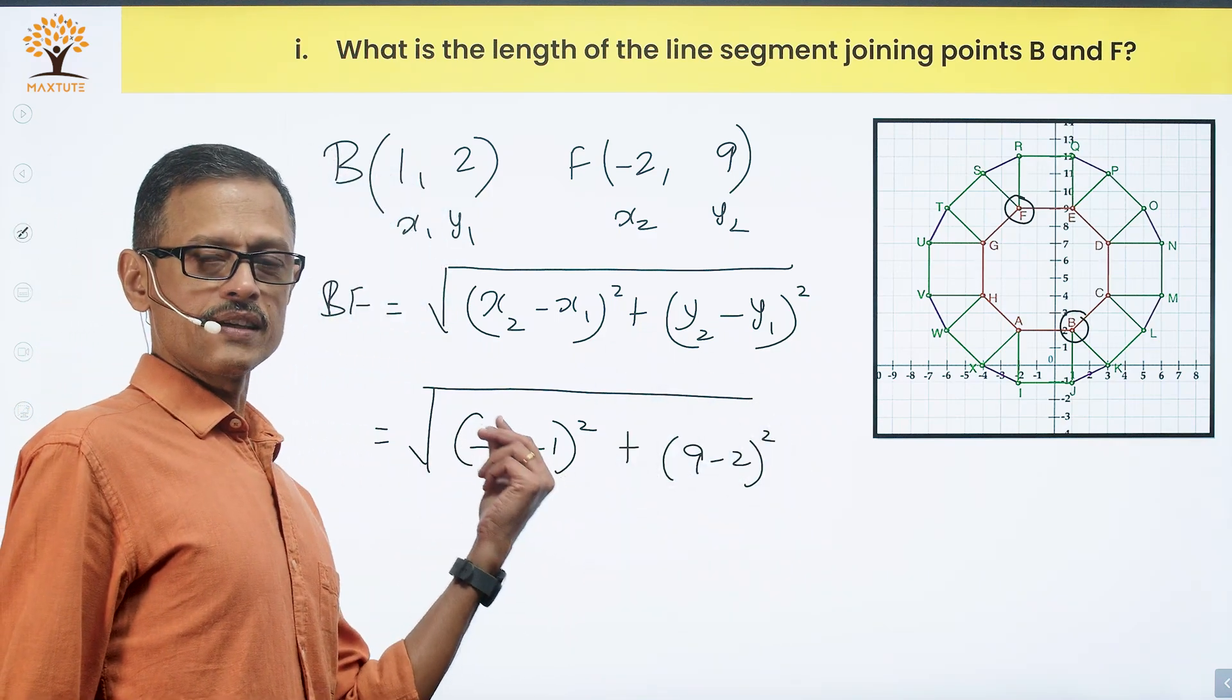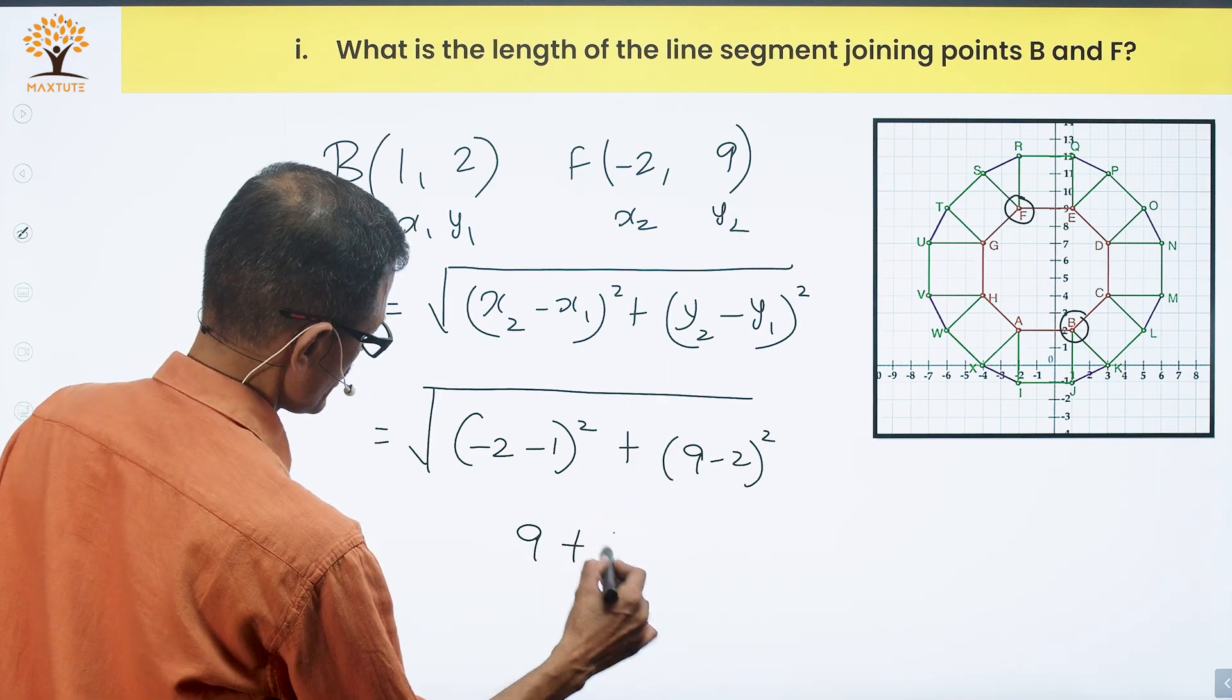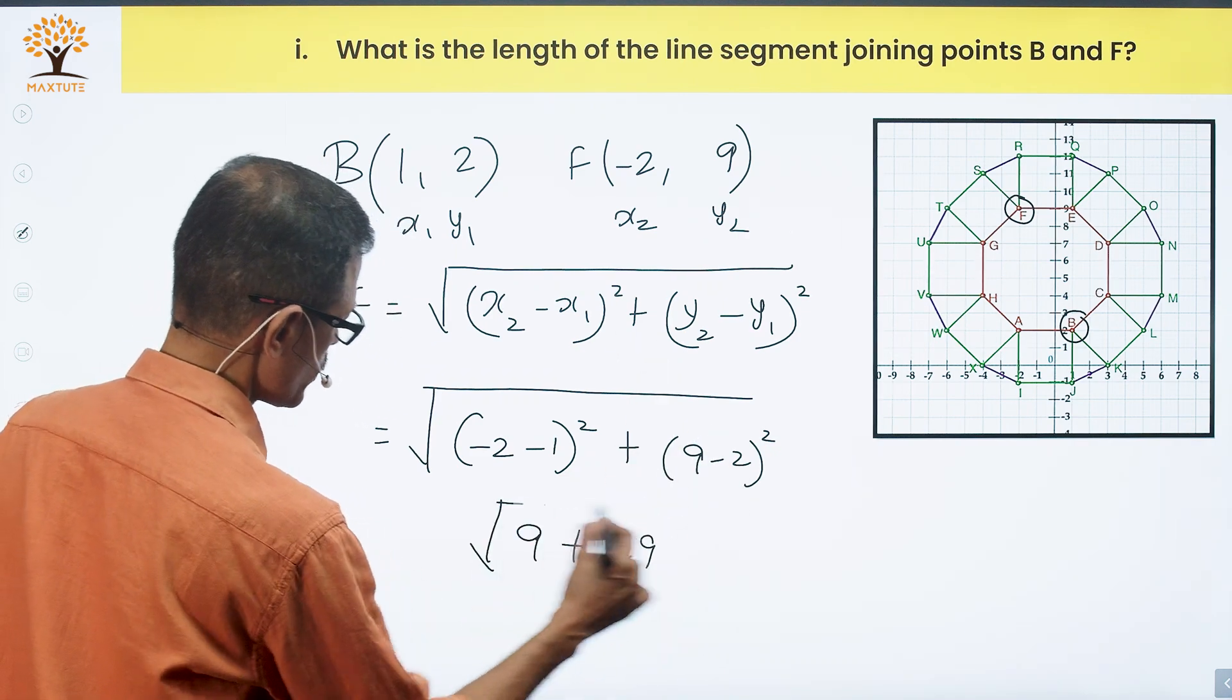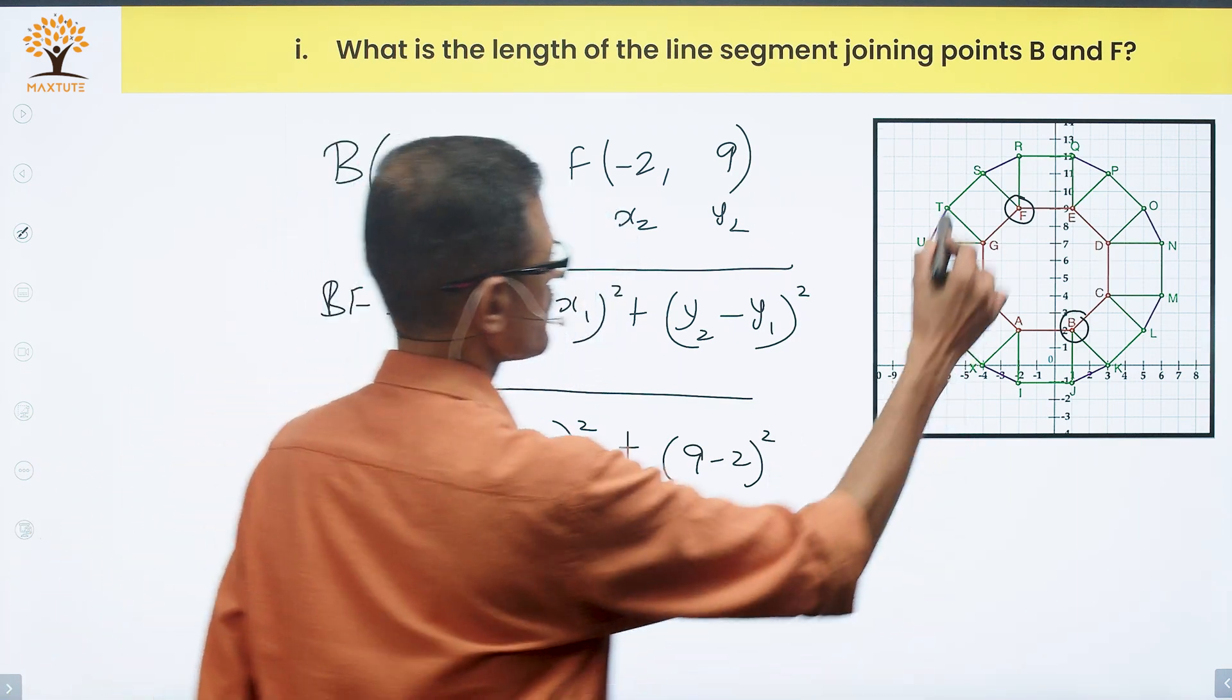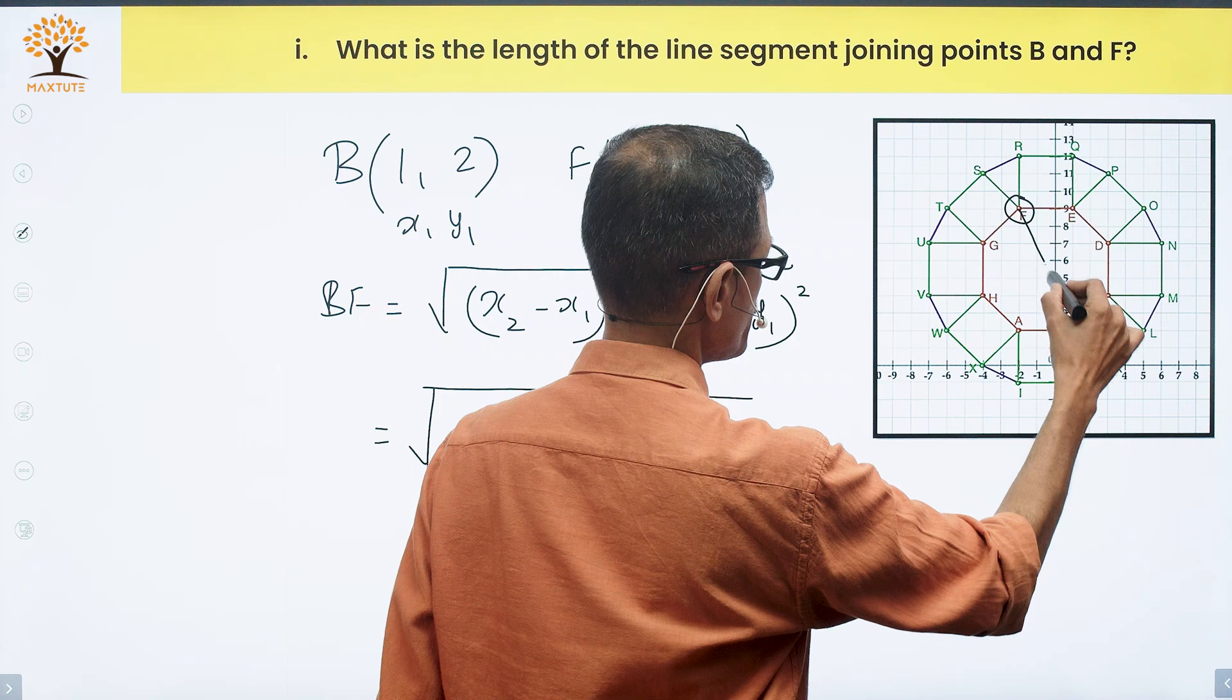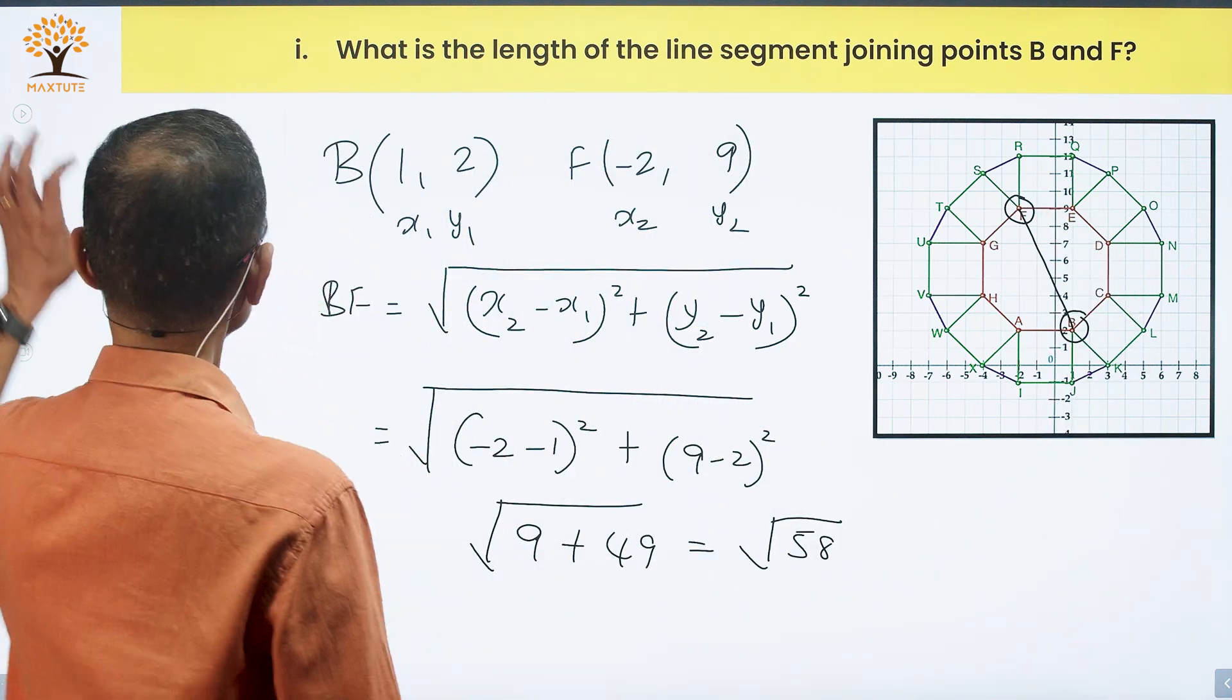In this case, x2 minus x1 is minus 2 minus 1 whole square, plus 9 minus 2 whole square. Minus 2 minus 1 is minus 3. Minus 3 square equals 9. 9 minus 2 is 7. 7 square is 49. Square root of 9 plus 49, which equals root 58. So the length of the line segment joining B and F is root 58.